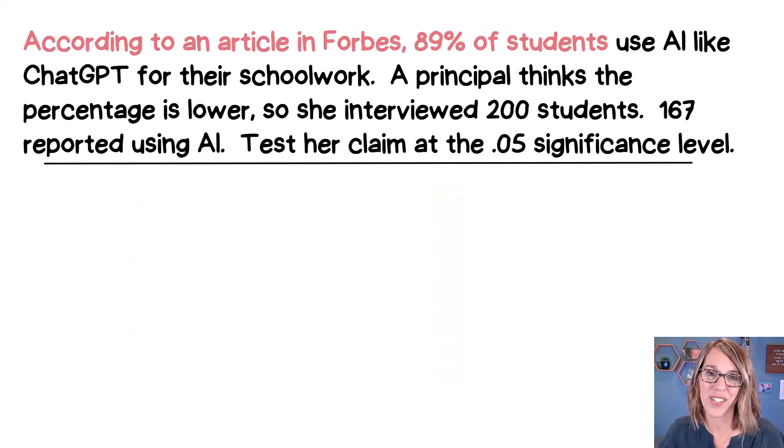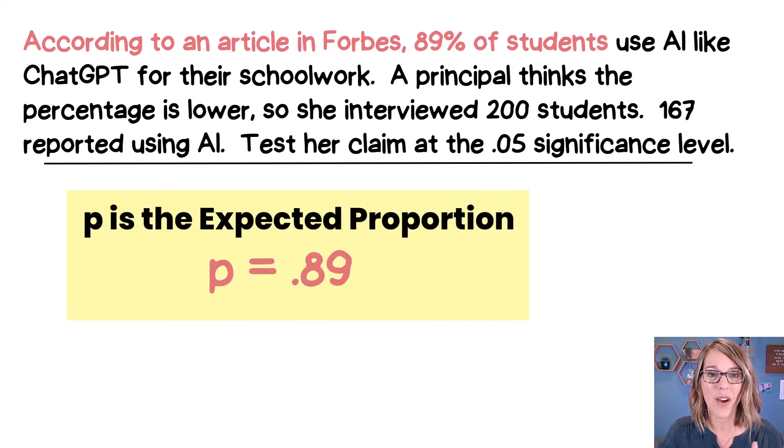Let's start with that very first sentence, 89%. Now this is the number that she's comparing against, so this is going to be our expected proportion, and we use P for the expected proportion, 0.89.